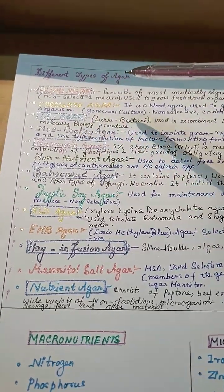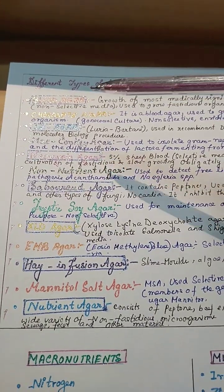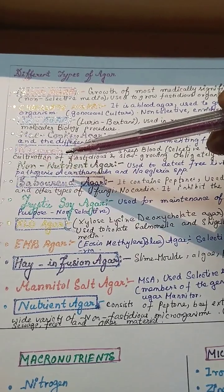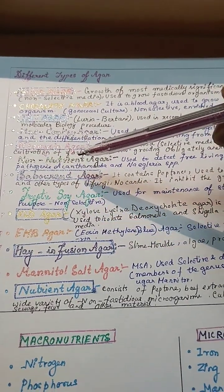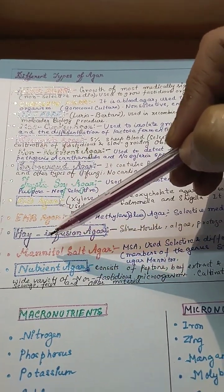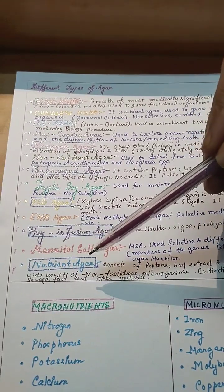Different types of agar: blood agar, chocolate agar, LB, neomycin, non-nutrient, seborot, cryptic, XLD, EMB, hay infusion agar, manitol salt agar, and nutrient agar.